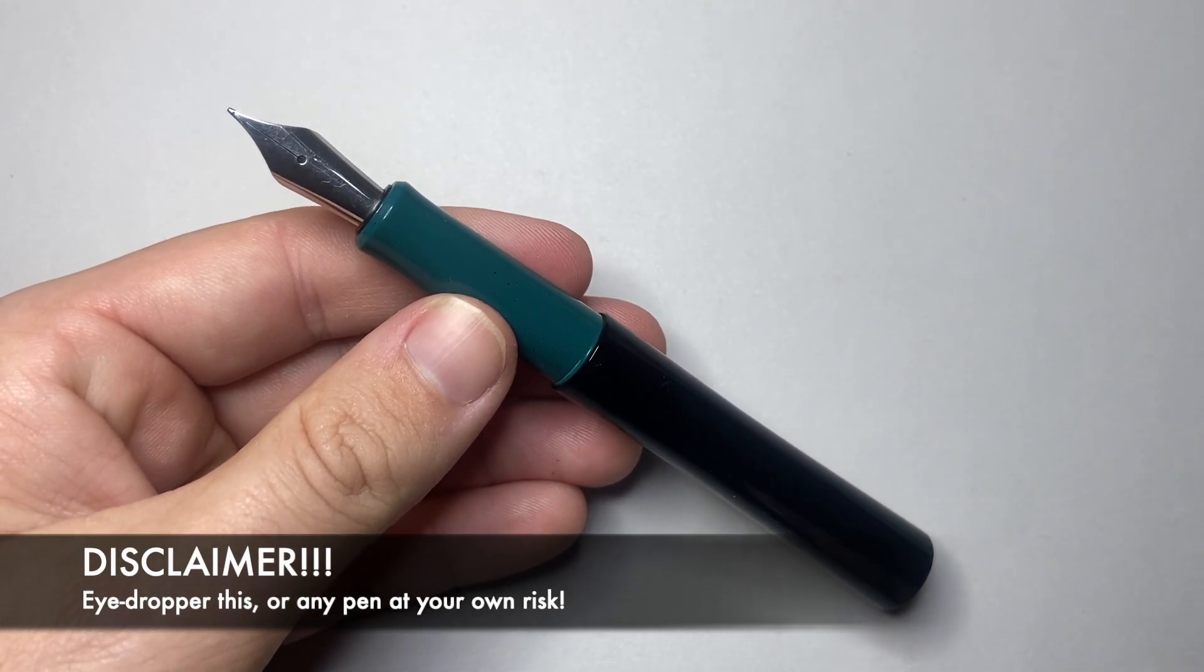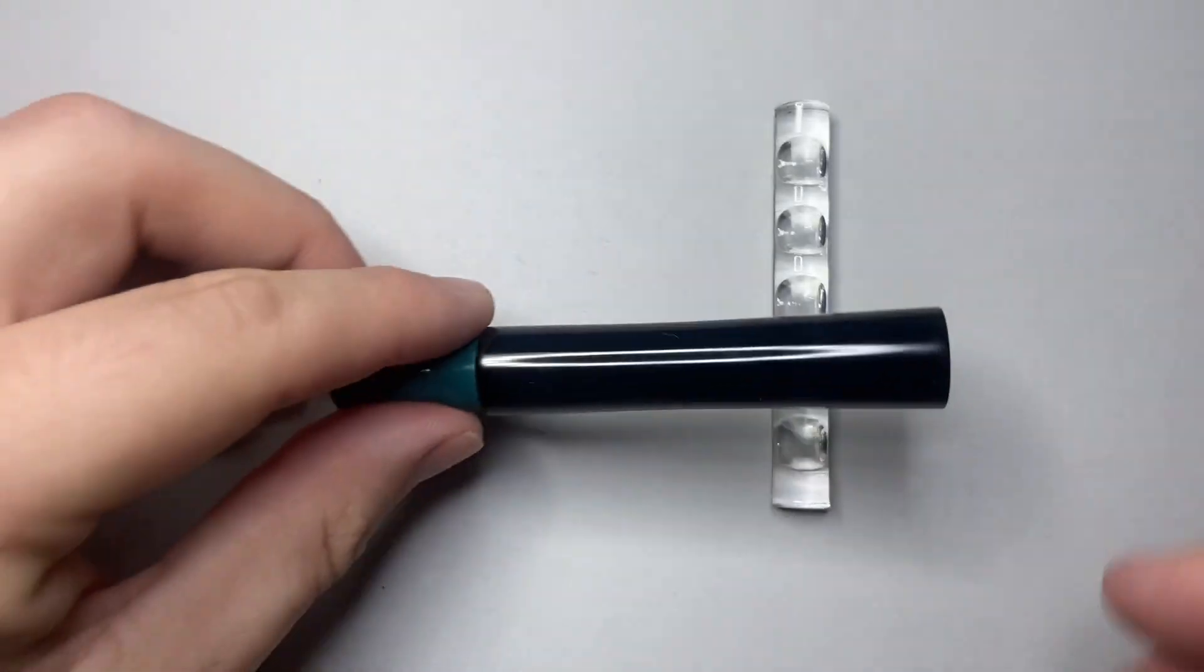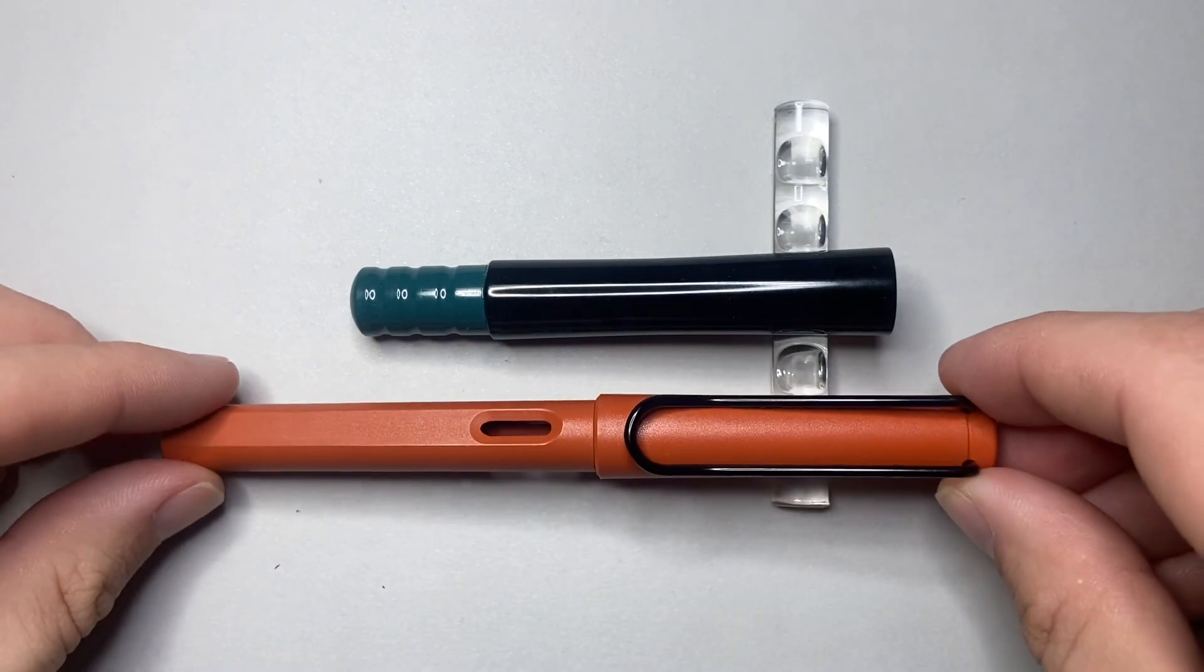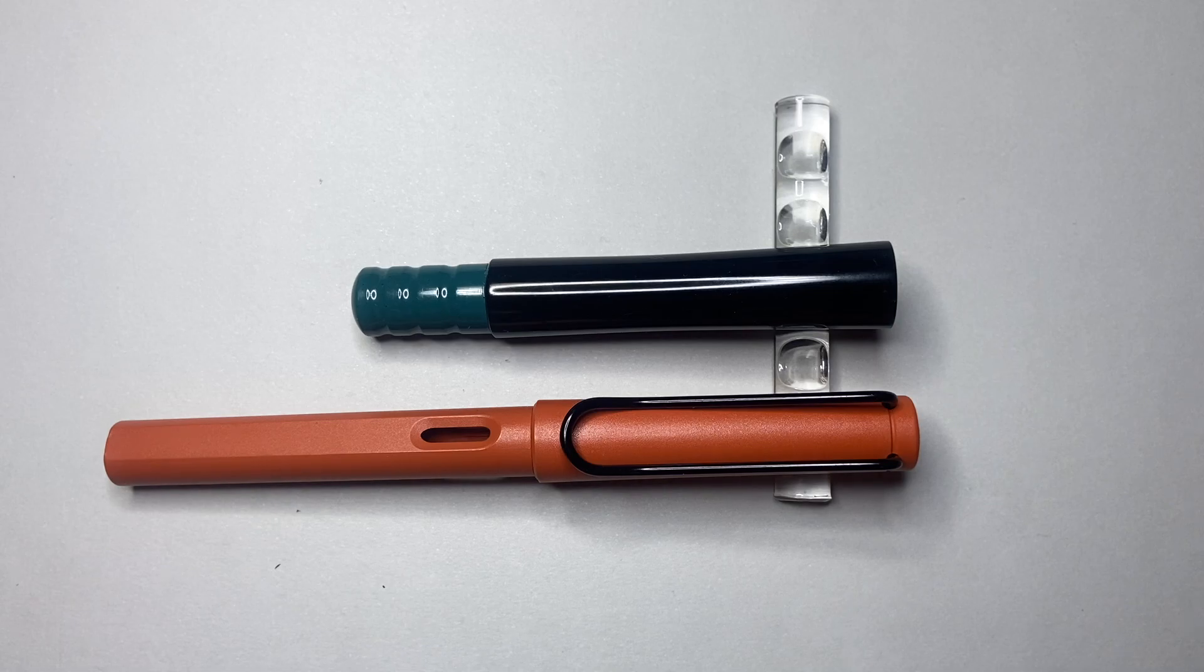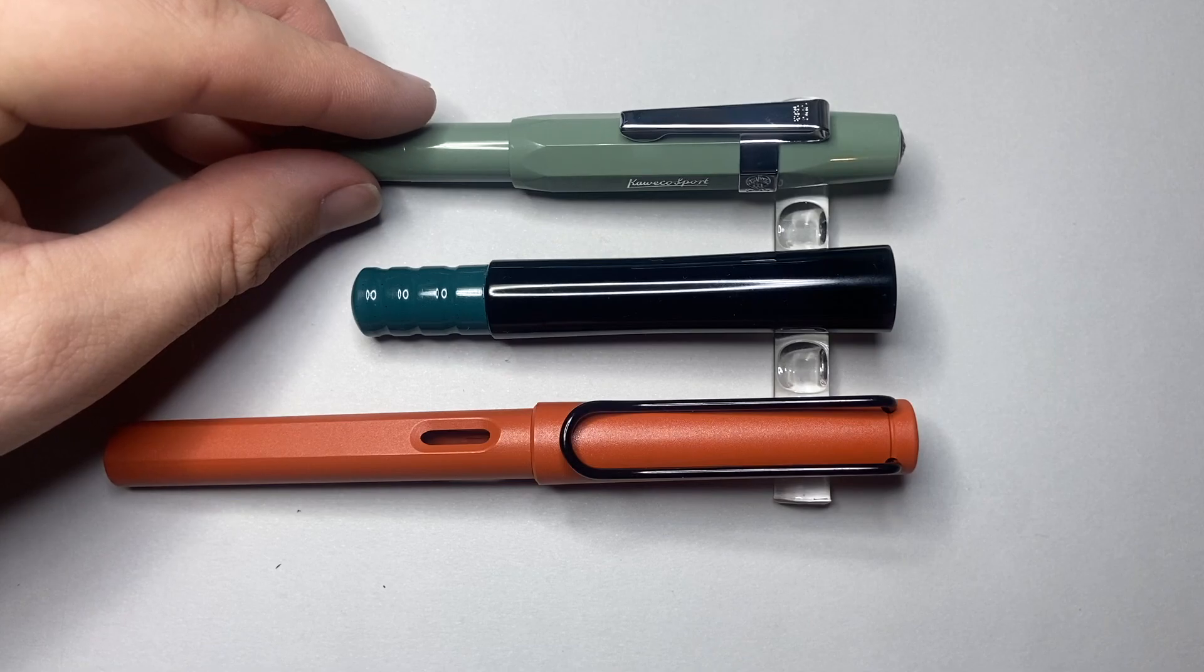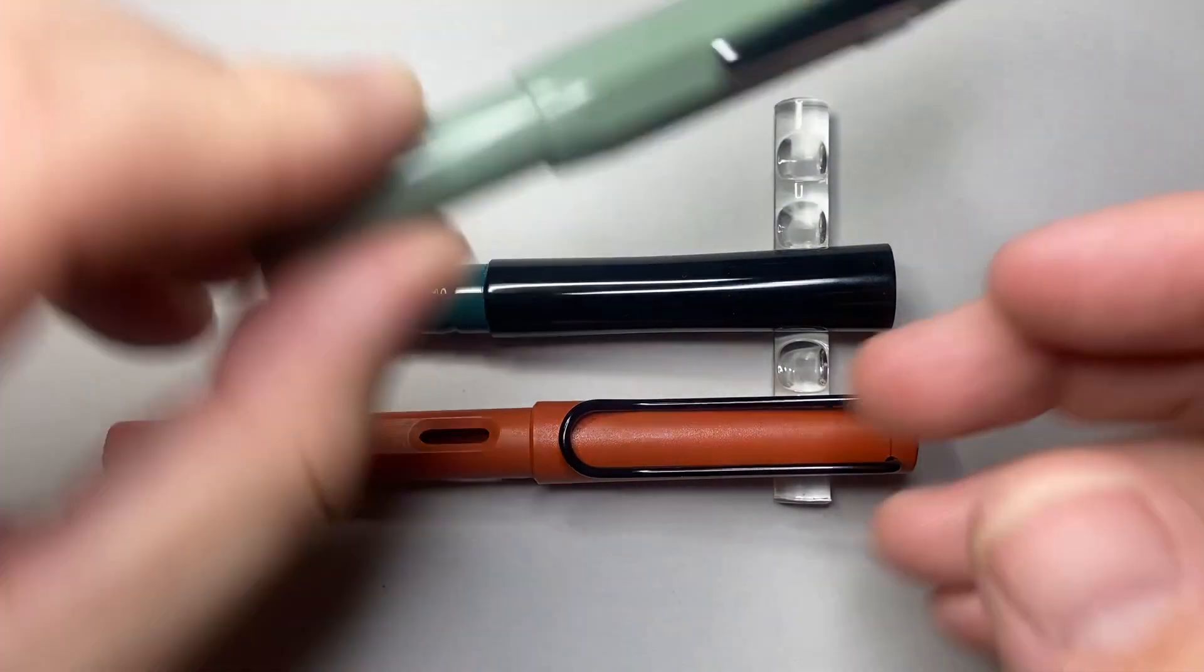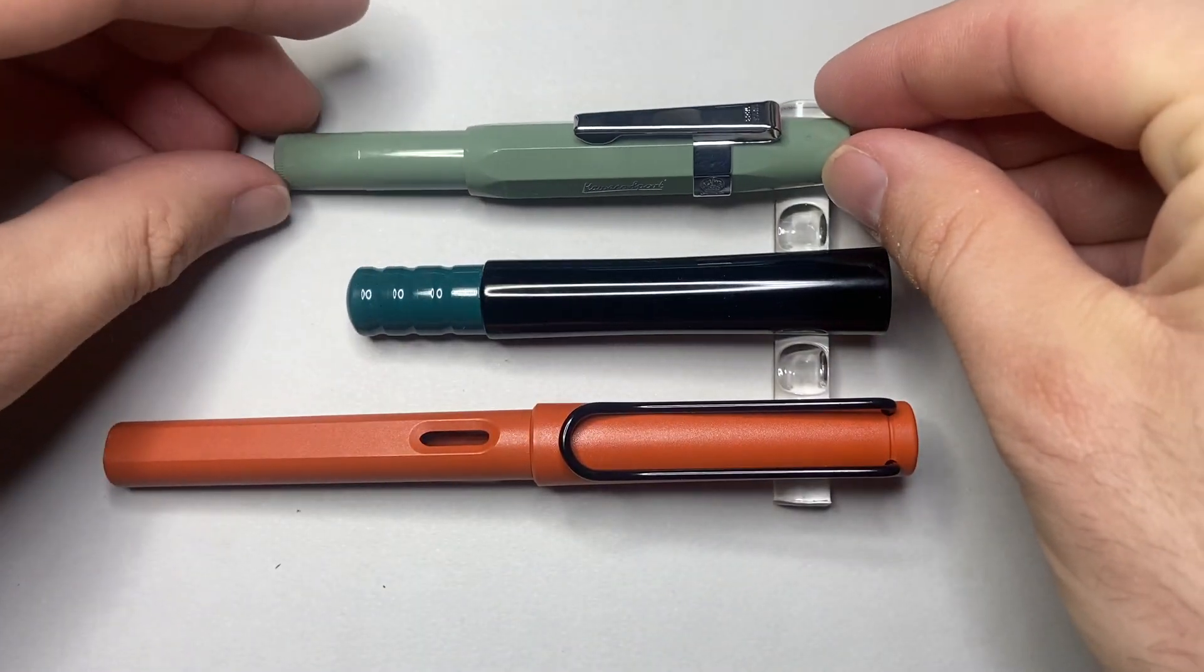We'll do a quick size comparison now with the traditional Lamy Safari. You can see it's a much smaller pen, obviously designed to be a pocket pen. I've put the Kaweco Sport here as well, this is one of the limited edition exclusives with Milligram here in Australia, the sage green, which I think is absolutely stunning.